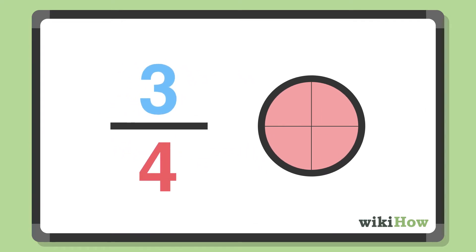For instance, the fraction three-fourths describes three equal parts of a whole that has been divided up into four parts total. Three is the numerator, while four is the denominator.